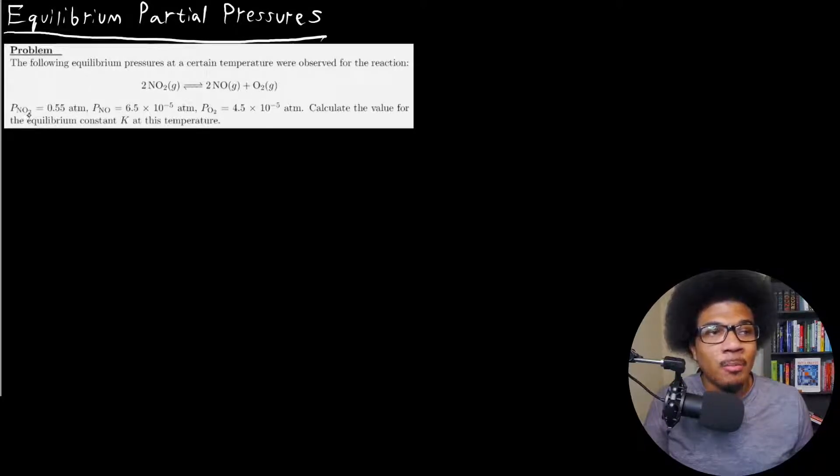And it gives you the partial pressures at equilibrium for each one in ATM. It says, calculate the value of the equilibrium constant K at this temperature.